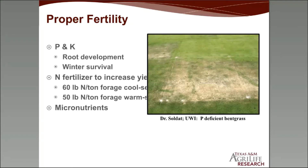Phosphorus and potassium are crucial for root development — deep roots give the plant access to water and nutrients and aid in winter survival. Nitrogen fertilizer is applied typically to increase yield: about 60 pounds of nitrogen per ton of forage produced for cool seasons, and about 50 pounds nitrogen per ton for warm season grasses. Micronutrients are needed in small amounts but are just as crucial. This photo shows a plot where phosphorus is deficient and the plant is unable to survive.